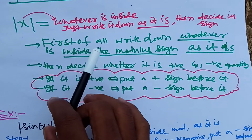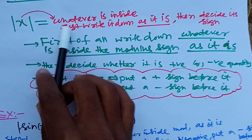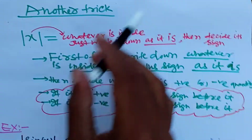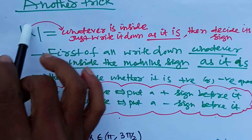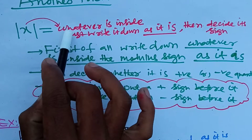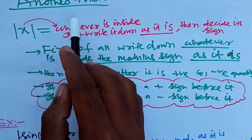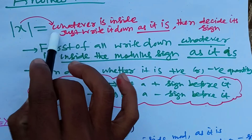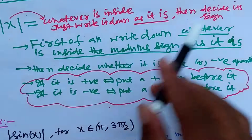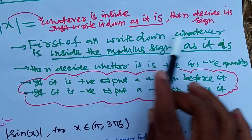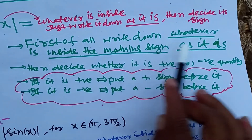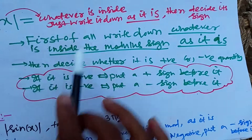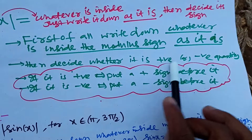Here is another trick to deal with the modulus function. Whatever is inside the modulus, just write it down as it is — copy and paste it. Then decide its sign: whether it is a positive quantity or a negative quantity. If it is positive, put a plus sign before it; if it is negative, put a negative sign before it.